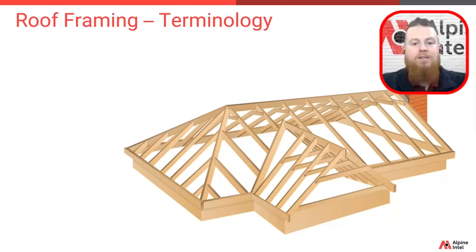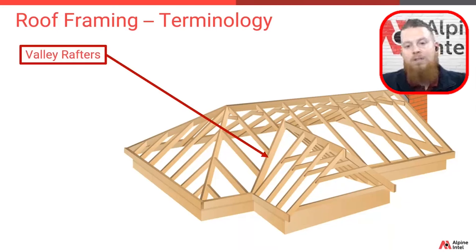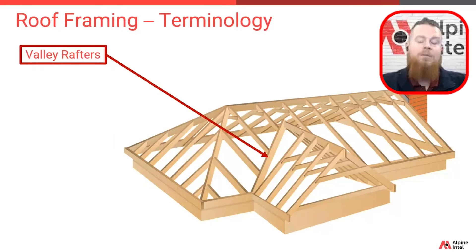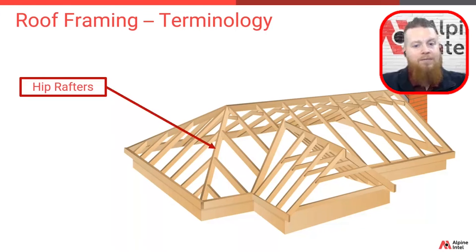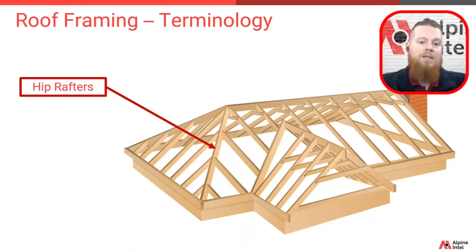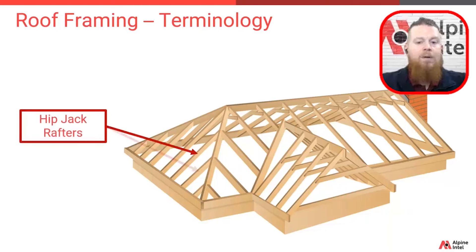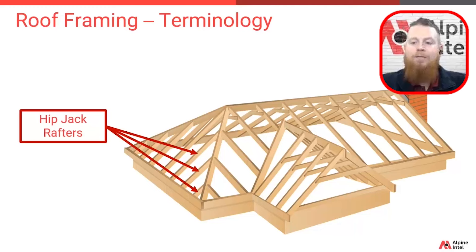Before we move on to trusses, the last few framing pieces we need to cover are valley rafters, which is a board that runs the length of the valley — that inside corner — this is that meeting point. Hip rafters are a lot like the ridge beam or board, but just at that hip angle. This is the meeting point of the outside corner. And rounding out traditional framing are the hip jack rafters, which are usually non-full-length framing pieces that connect the eave to that hip rafter. They jack up or hold up that hip rafter.